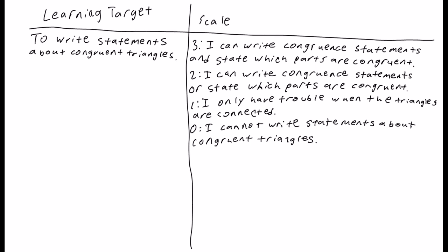You can't do both. One, you have trouble when the triangles are connected — sometimes we'll have triangles that are connected and you'll have to do some things about congruency there. And zero, you cannot write statements about congruent triangles. Let's get started.